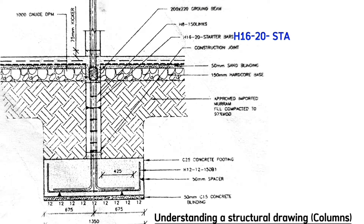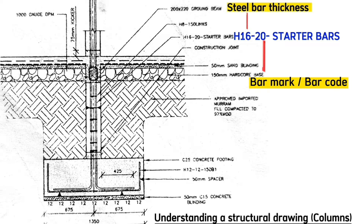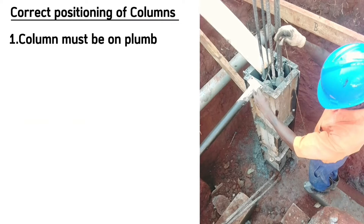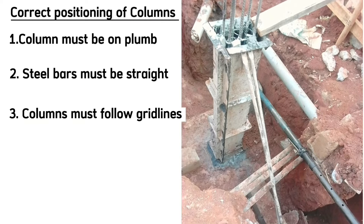The drawing details that these starter bars are all thickness H16, code 20. What is most important is the bar thickness, which is 16. It also details that this bar will be at 425 millimeters, and that is exactly what we did on the ground — 425 millimeters with H16 steel bars.